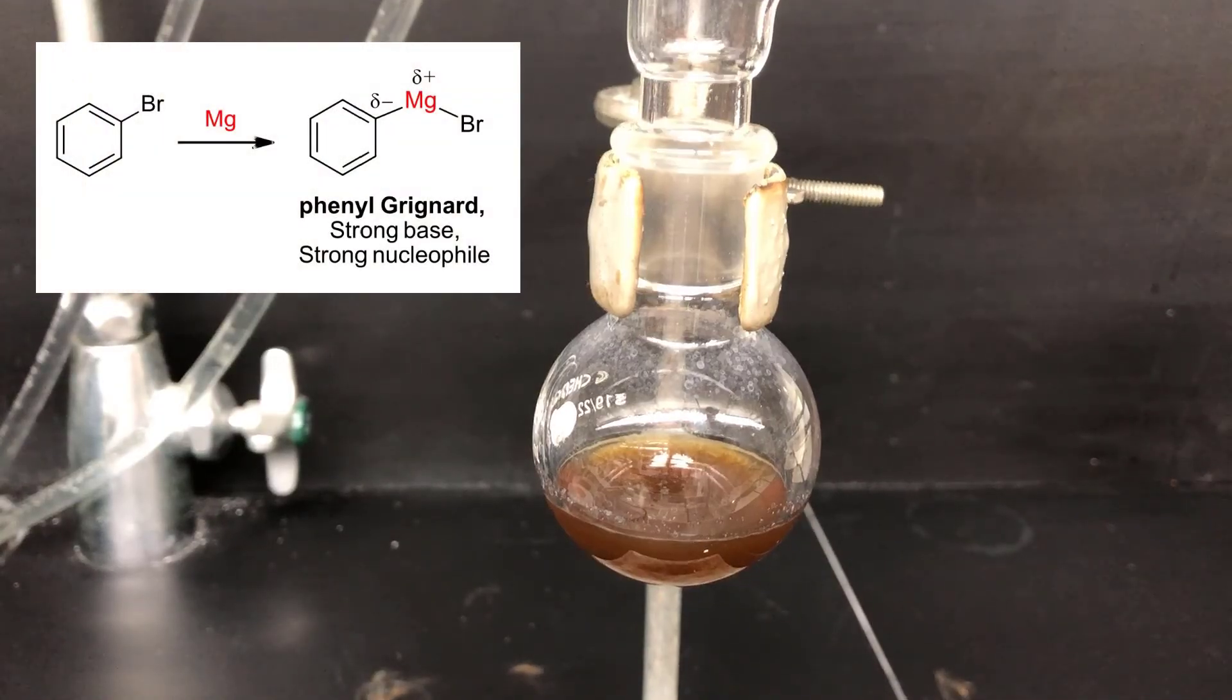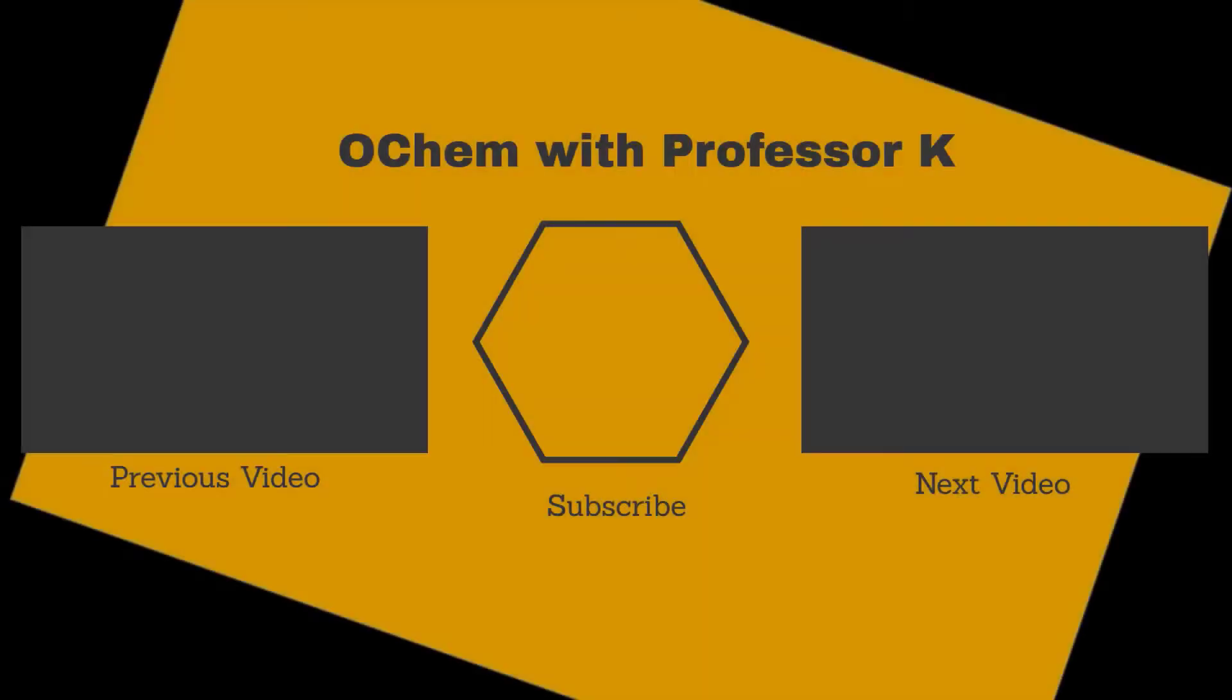Stay tuned for the next video in the series where I add this Grignard reagent to CO2 and make a new carbon-carbon bond on the way to forming benzoic acid. If you found this video useful, check out the next one in the series or watch the prior video. And consider subscribing to my YouTube channel. My name is Brant Kedrowski. Thanks for watching.